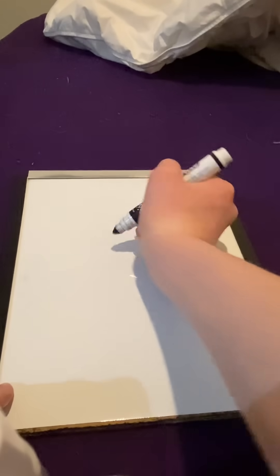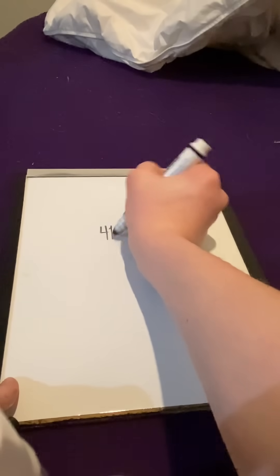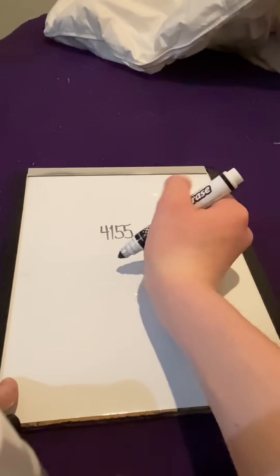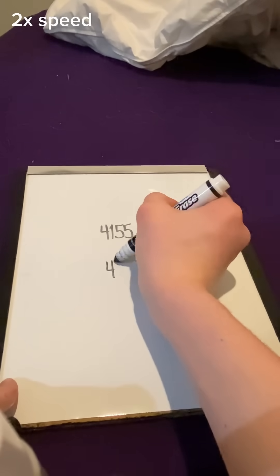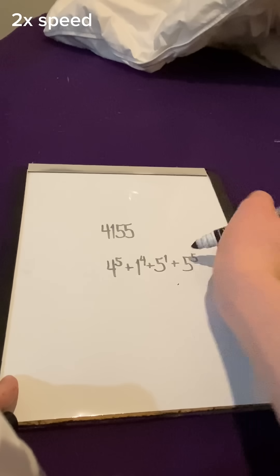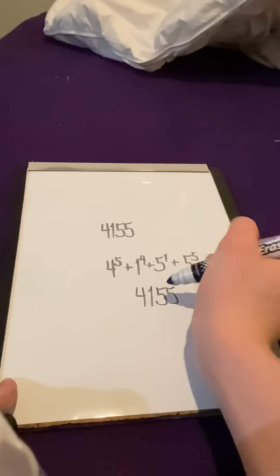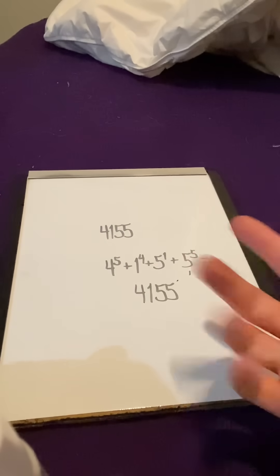Another number that works the same way is 4,155. Because this number, like, 4 to the 5th plus 1 to the 4th plus 5 to the 1st plus 5 to the 5th equals 4,155. And you can see that the exponents are the same exact digits.